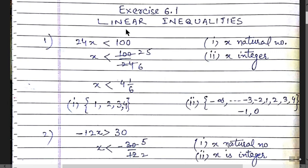The first statement is 24x less than 100. There are two parts: in Part 1, x is a natural number, and in Part 2, x is an integer. When we divide both sides by 24, the right-hand side becomes 25 over 6, which in mixed fraction form is 4 and 1 over 6. So the value of x should be less than 4 and 1/6, i.e., 25/6.